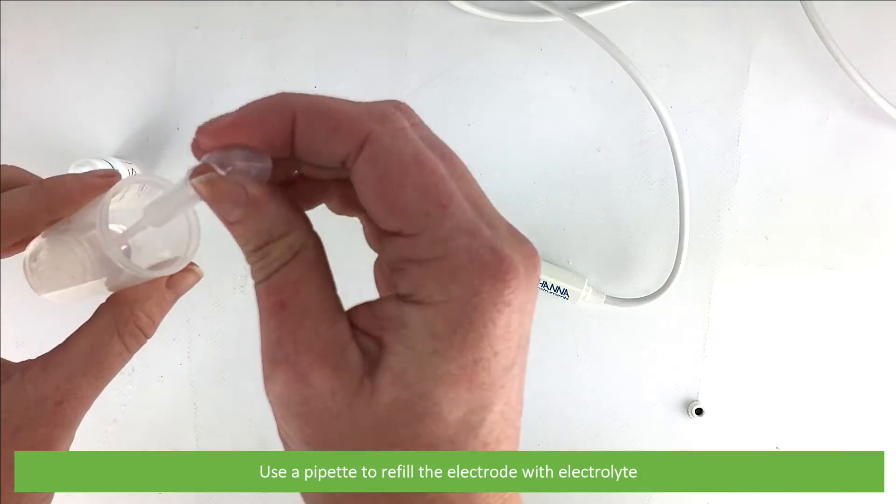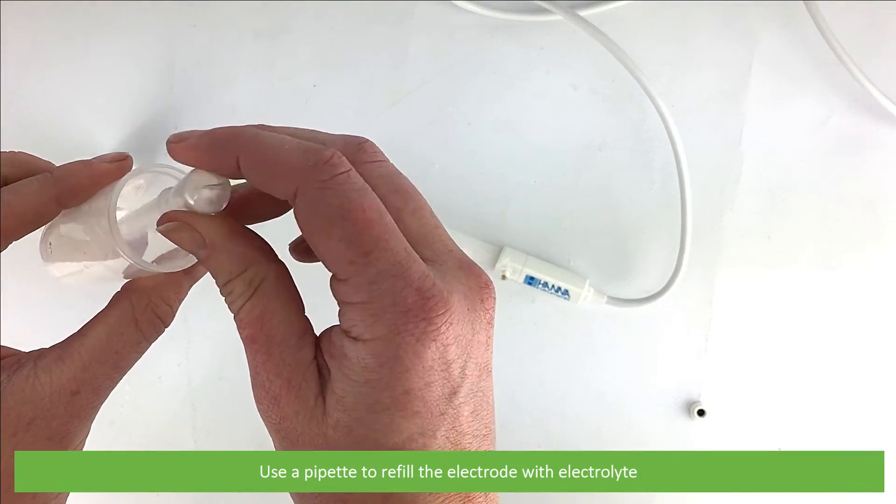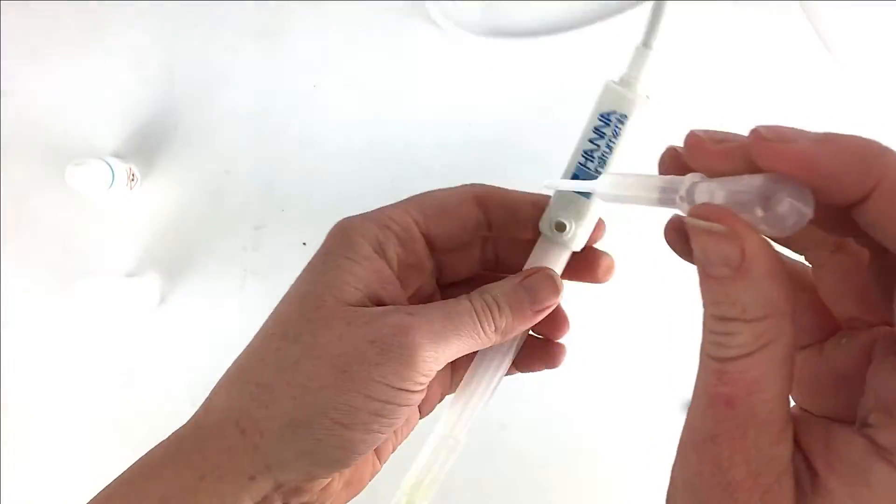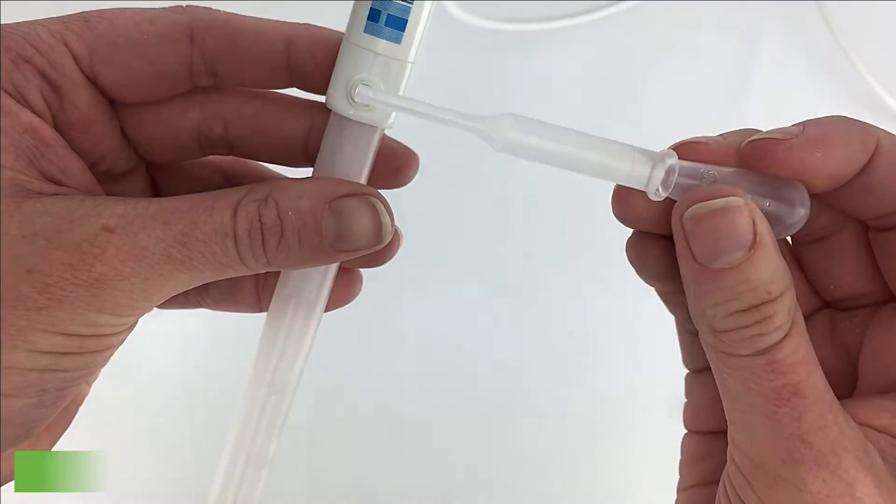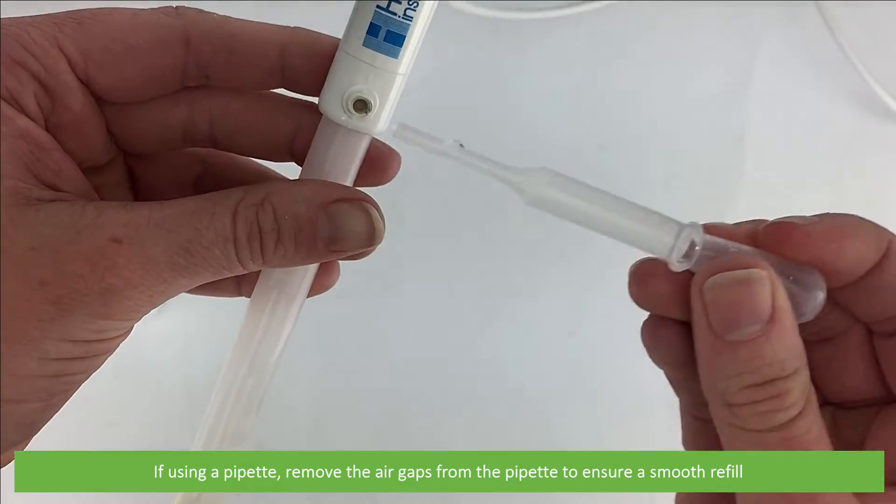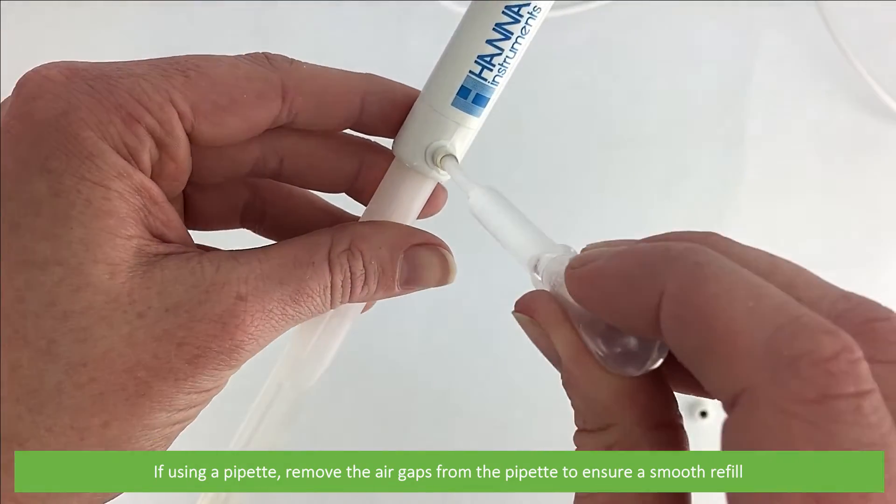Use a pipette to refill the electrode with electrolyte. If using a pipette, remove the air gaps from the pipette to ensure a smooth refill.